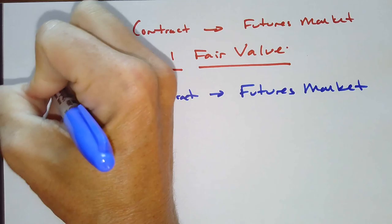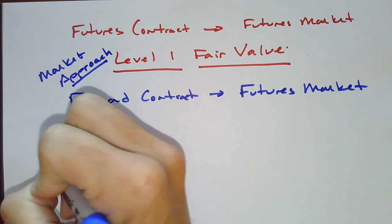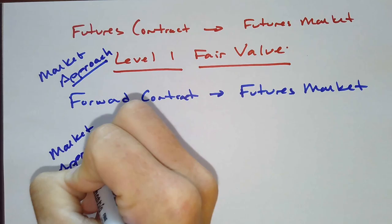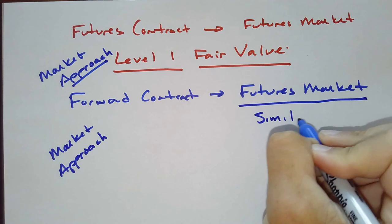So I can use again, level one is a market approach. I can use a market approach for my forward contract by looking at similar assets or similar contracts in the futures market to determine the fair value.